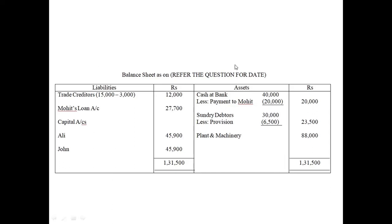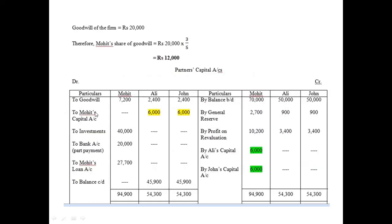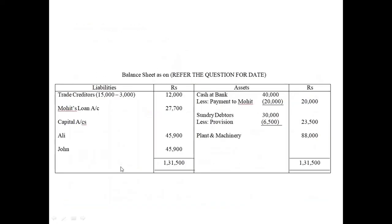We now prepare the balance sheet as it is. In the asset column, Mohit's loan account is 27,700, which has been carried forward in the balance sheet as 27,700. The remaining figures stay the same, and some figures from the previous chapter should already be known.